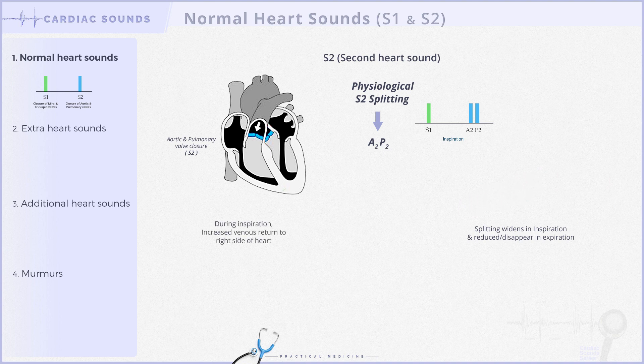What causes this variation? During inspiration there's heightened venous return to the right side of the heart. Consequently, the emptying of the right ventricle and the closure of the pulmonary valve are delayed, leading to an augmented splitting of S2. Conversely, during expiration the splitting diminishes or may even vanish altogether.